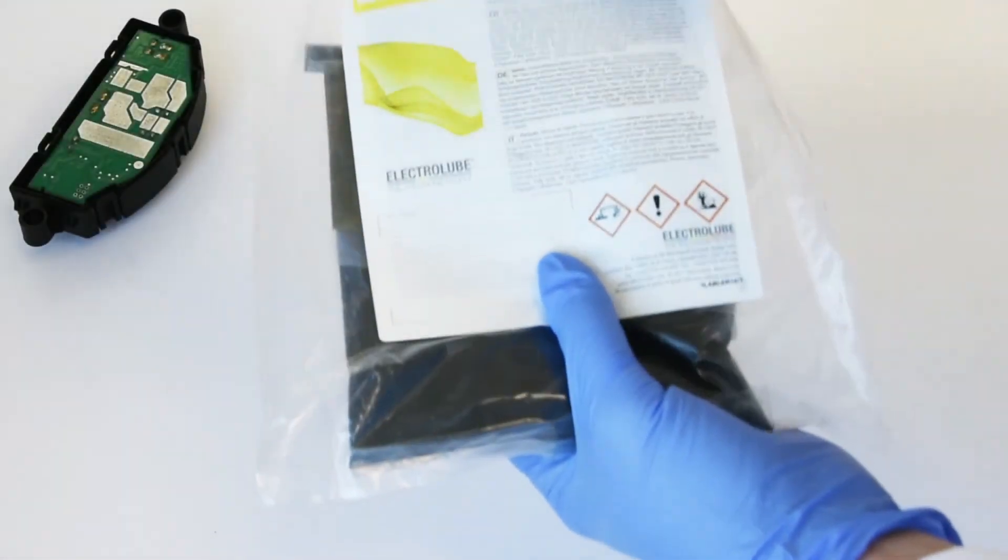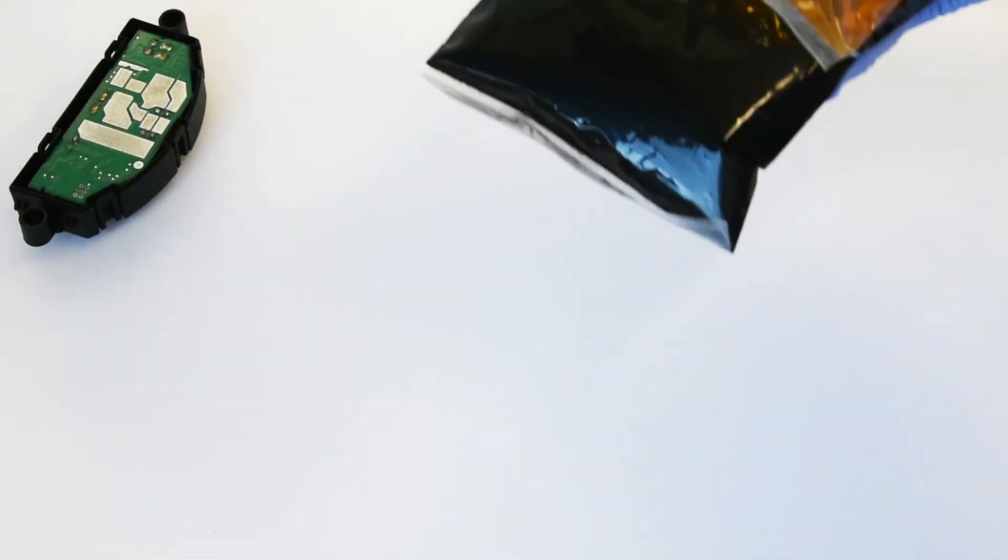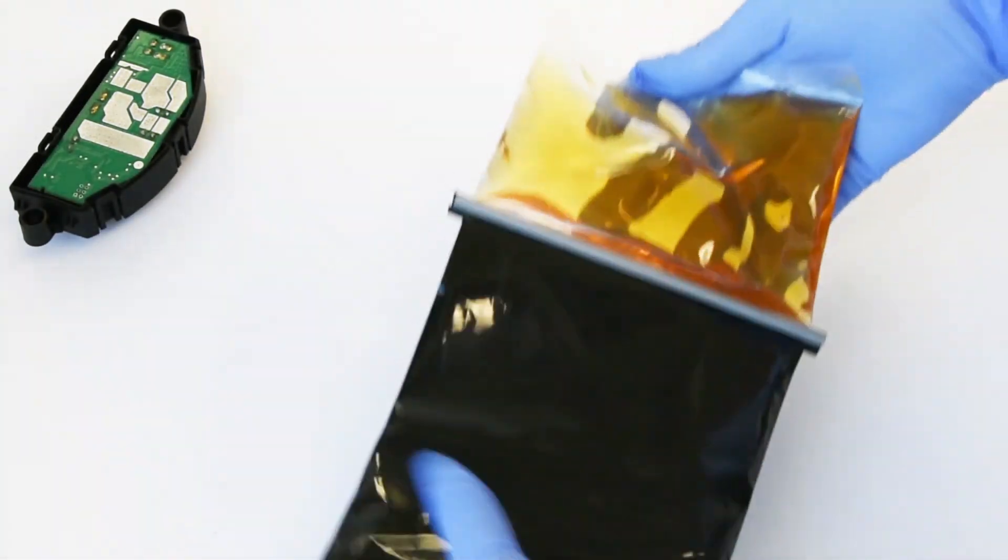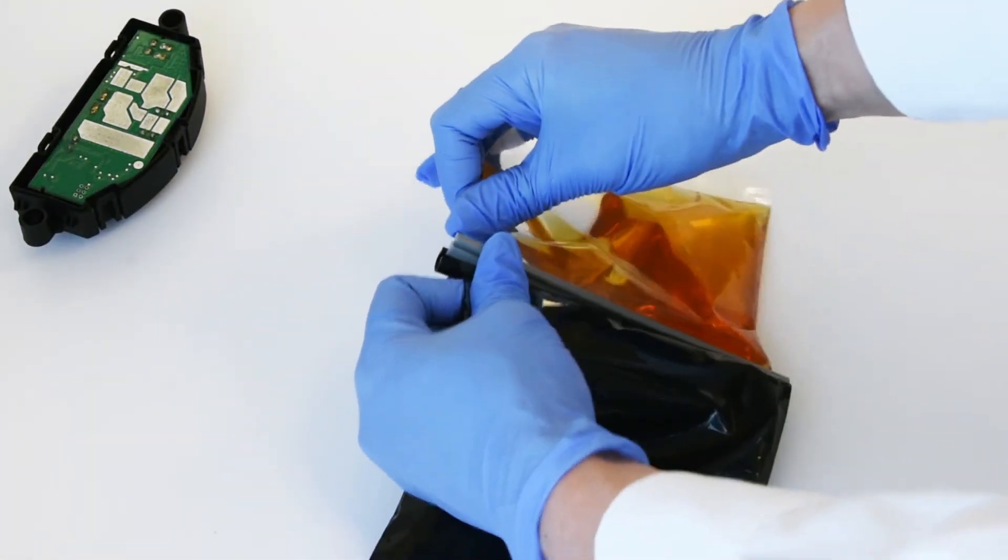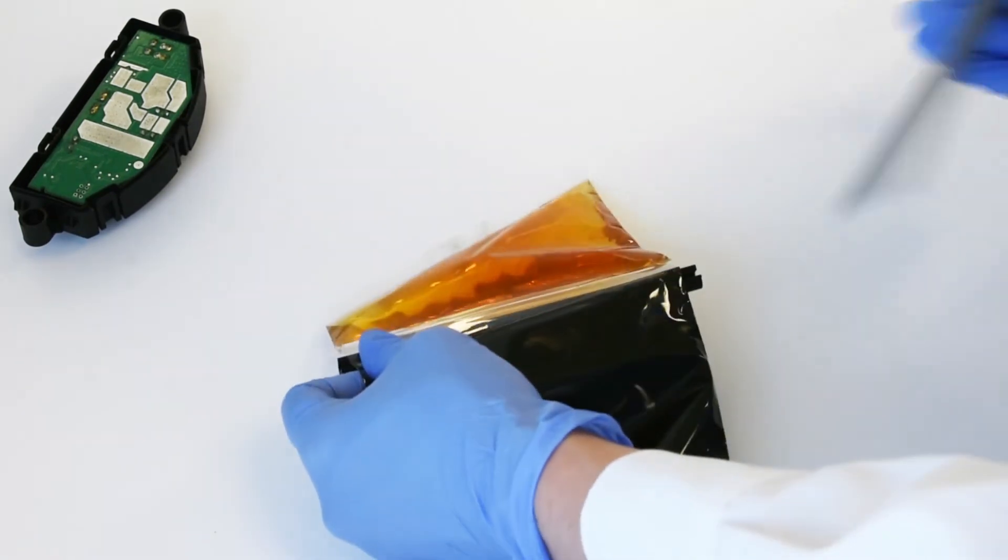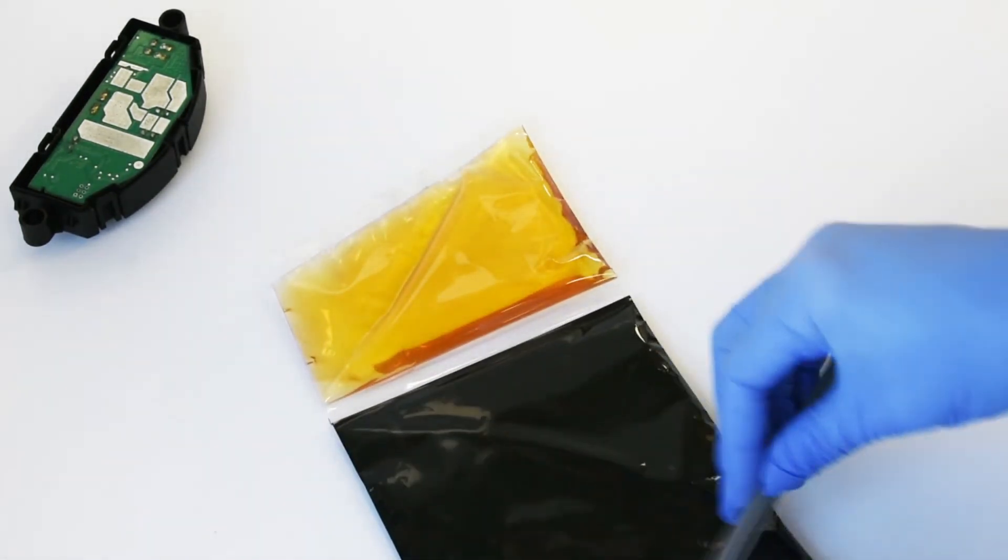To begin the mixing process, remove the pack from its packaging and remove the end cap. Gently pull apart the pack so that the clip pops open. This allows the two parts of the resin pack to combine.